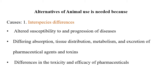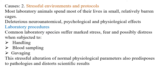Differing absorption, tissue distribution, metabolism, and excretion (ADME) are completely different from humans, and toxicity is also different. Some animals can withstand high quantities of toxin while others may be very sensitive. In that case, we cannot exactly predict or compare the toxicity between animals and humans.